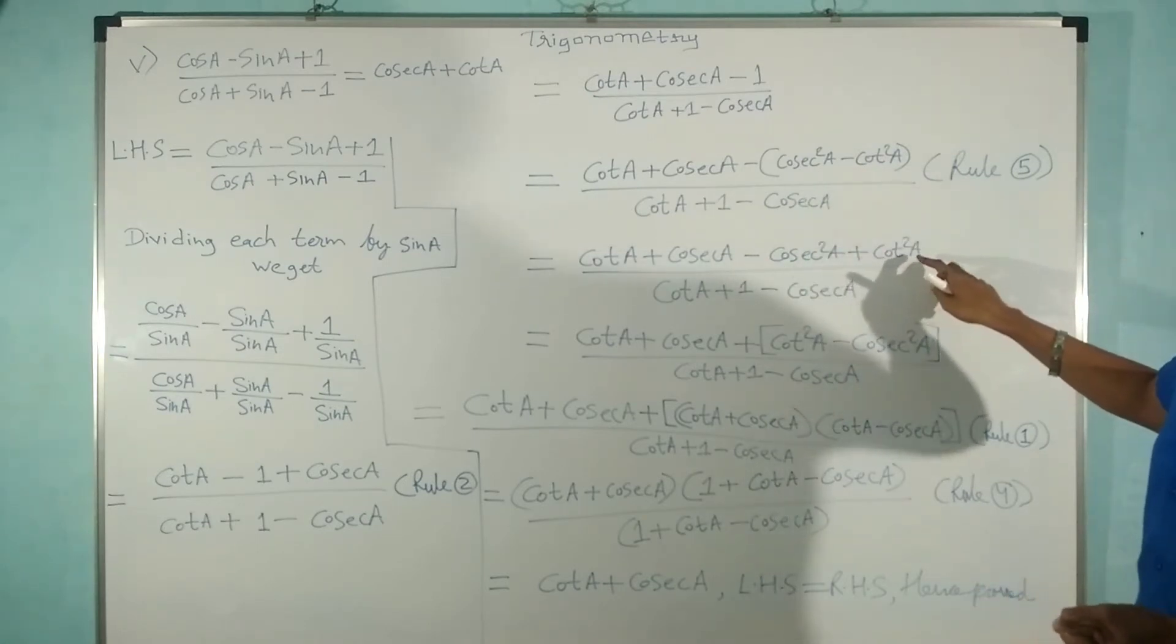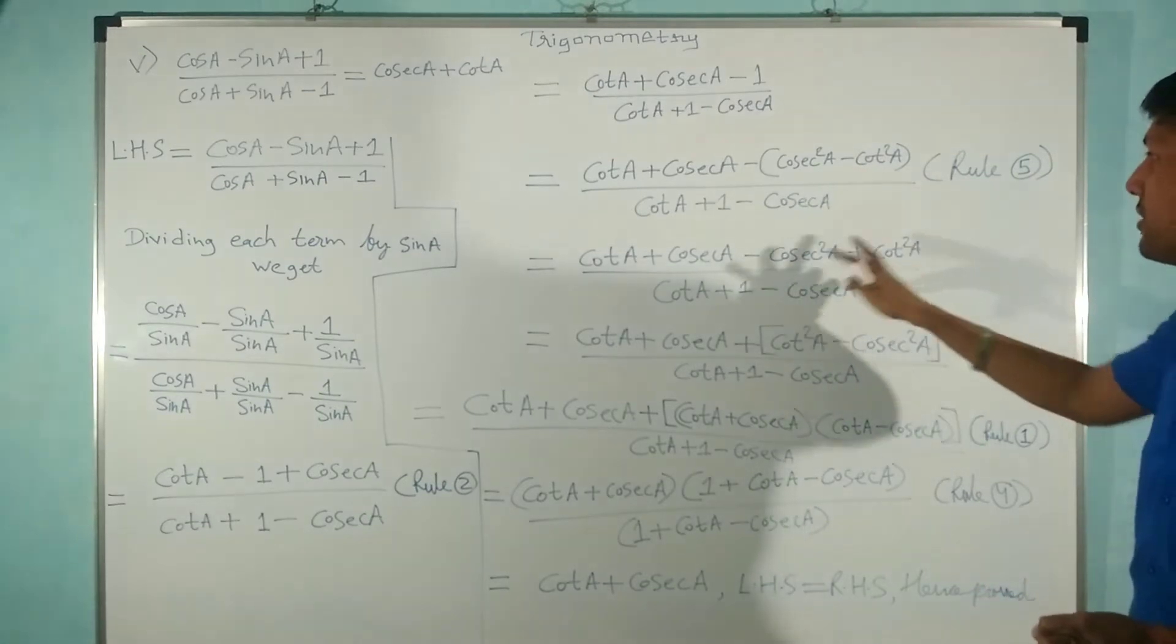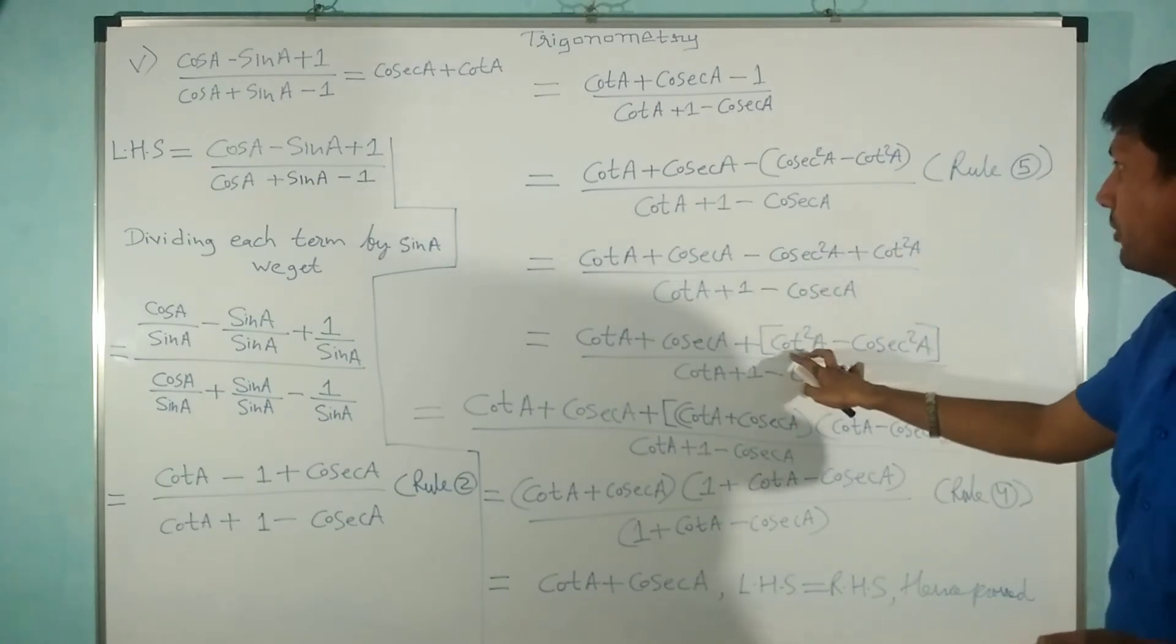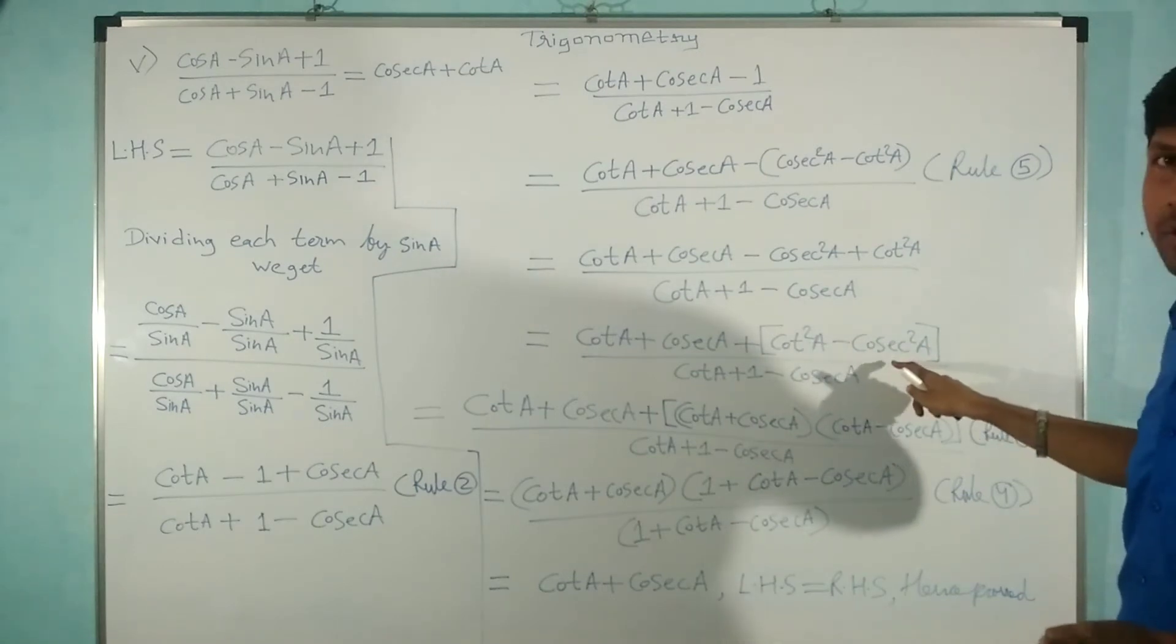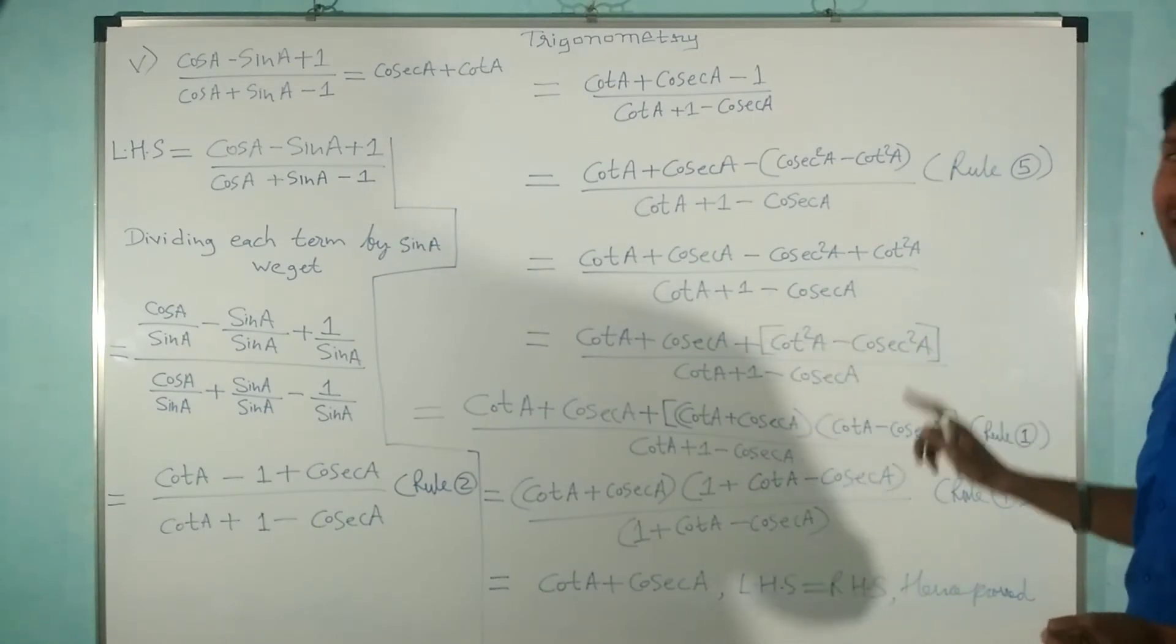After this, what did I do? I just replaced cot² A first and minus cosec² A after, so after this I can use a² - b² identity—that is our rule number one, algebraic identities.